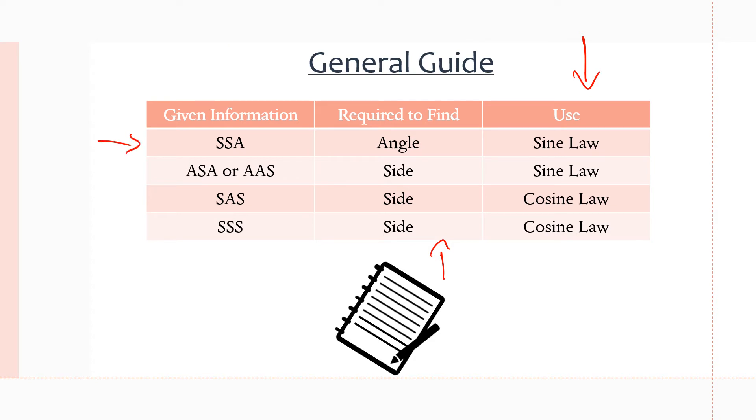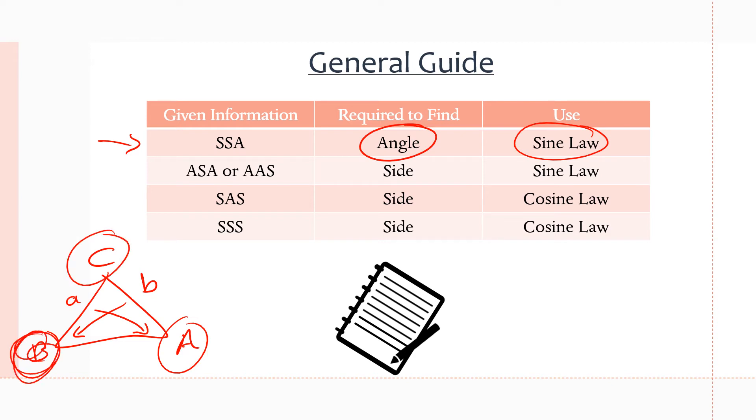When you're given a side-side-angle triangle, so you know side A, side B, and an angle, for example angle A, and you're required to find an angle like angle C, we want to use the sine law to solve this question. If we know two sides and an angle, this is one of our scenarios where we can use the sine law because we know a side opposite to a known angle and another side opposite to an unknown angle B, which gives us the ability to find B. Once we have found B or A, we can use the law about the interior angles in a triangle that add up to 180 to find C, or if it's asking us to find B, we just use the sine law once.